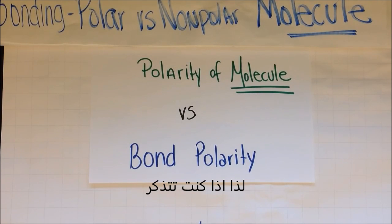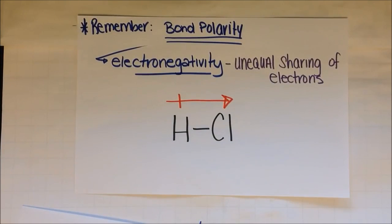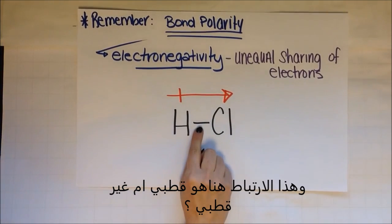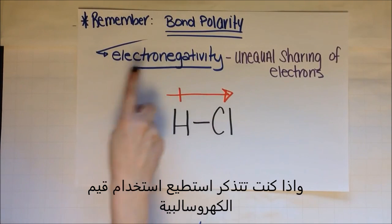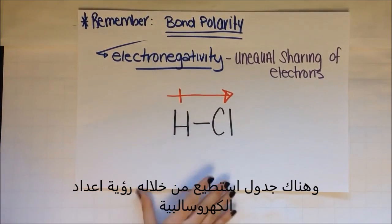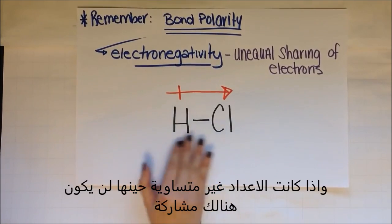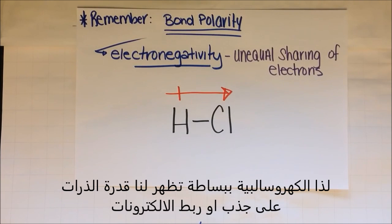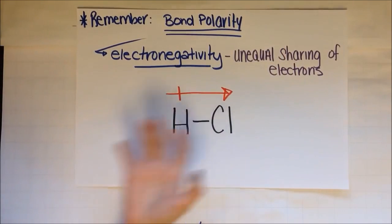We've already discussed bond polarity, so let's review that quickly. Looking at hydrogen bonded to chlorine, we can ask: is this bond polar or nonpolar? We can use electronegativity values — there's a chart with these numbers, and if the numbers are not equal, there's uneven sharing. Electronegativity basically shows an atom's ability to hog electrons when bonded.